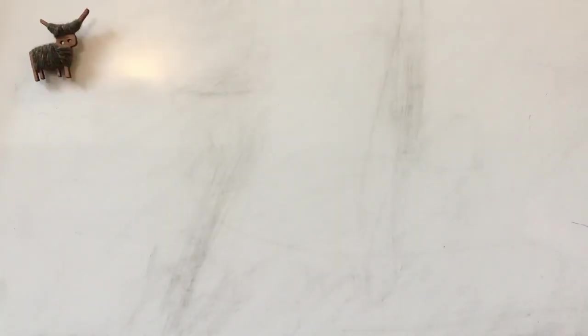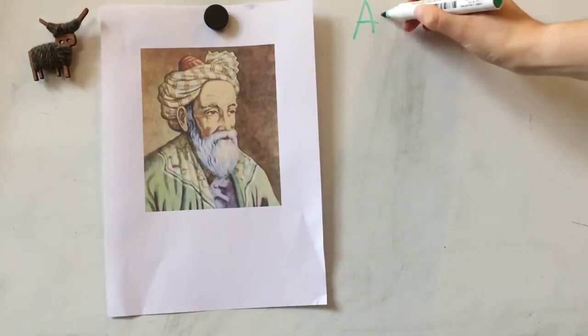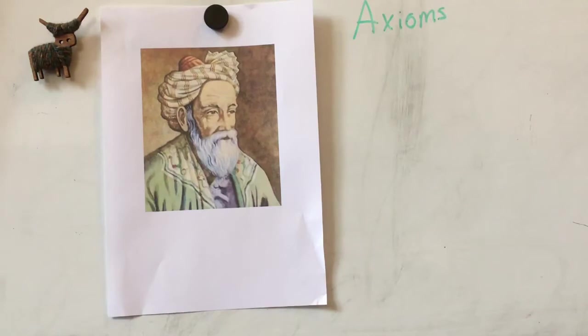The modern idea of a proof is thought to have originated in ancient Greek times, around 300 BC. This is Euclid, you might have heard of him. He developed a set of logical rules, which we call axioms, that we all agree to be true.